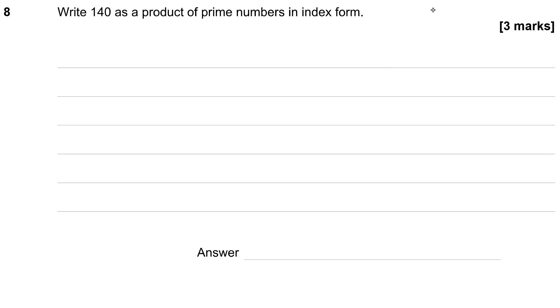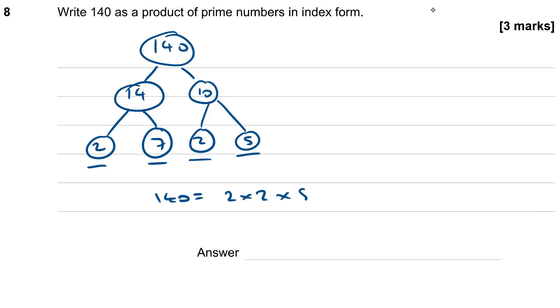Question 8. Write 140 as a product of prime numbers in index form. I tend to do these with factor trees, so start with 140, and I think of two numbers that multiply together to give me 140. I'm getting 14 and 10 pop into my head. And now 14 is made up of 2 times 7, both of which are prime numbers, and 10 is made up of 2 times 5, again, which are all prime numbers. So 140, then, is going to be 2 times 2 times 5 times 7, which in index form is 2 squared times 5 times 7. Always a good idea just to double check your maths here, 2 squared is 4, times 5 is 20, and times 7 is 140, as required.